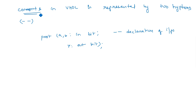This is about identifiers in VHDL, which consist of basic identifiers and extended identifiers, and we also covered comments. Thank you.